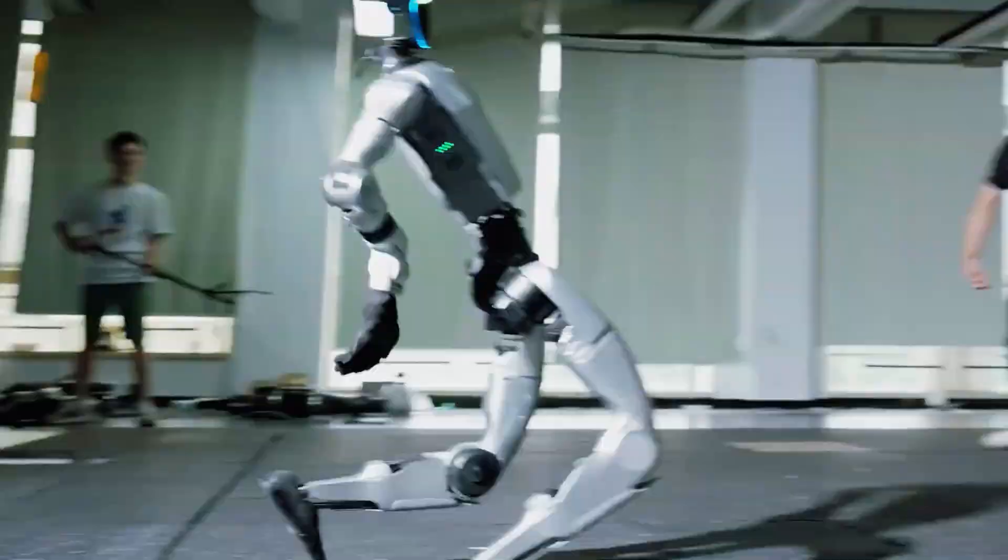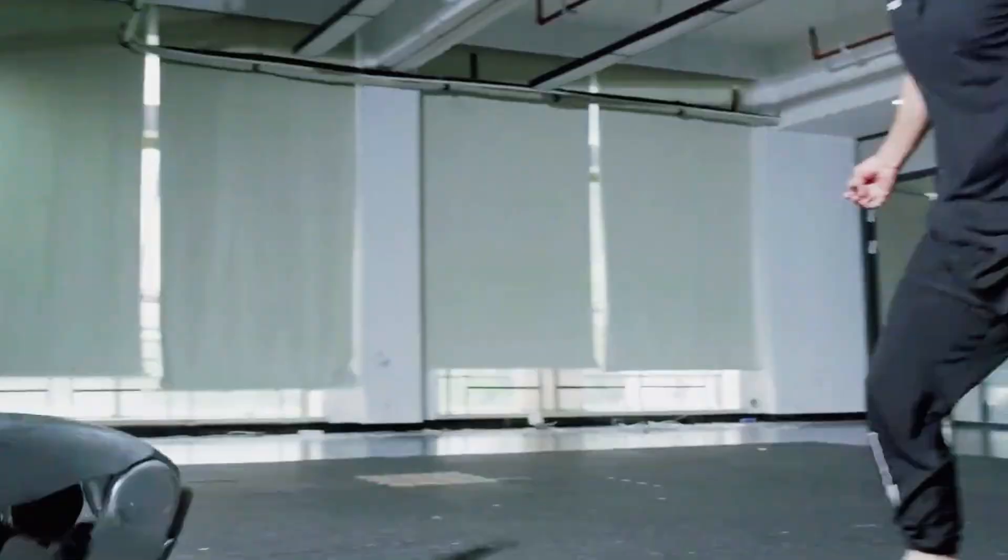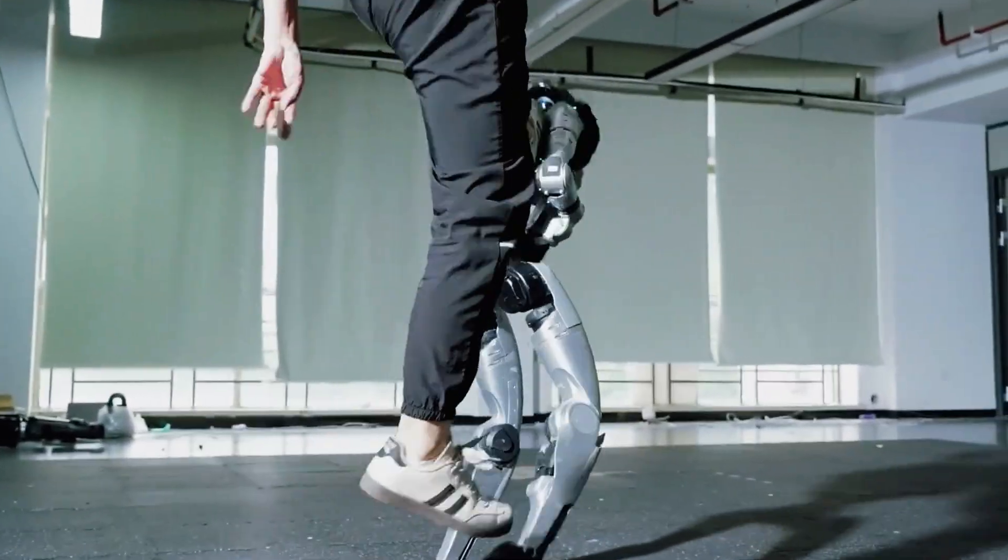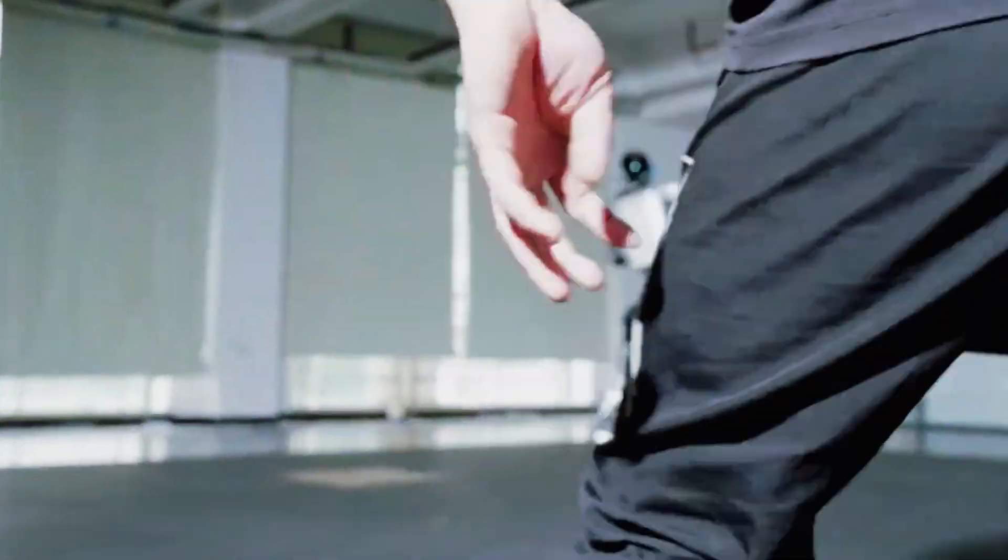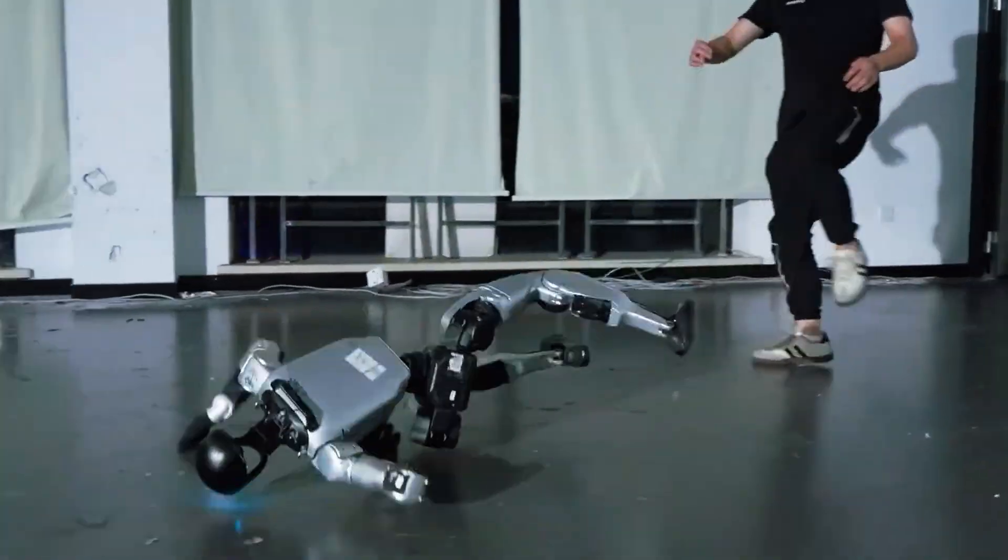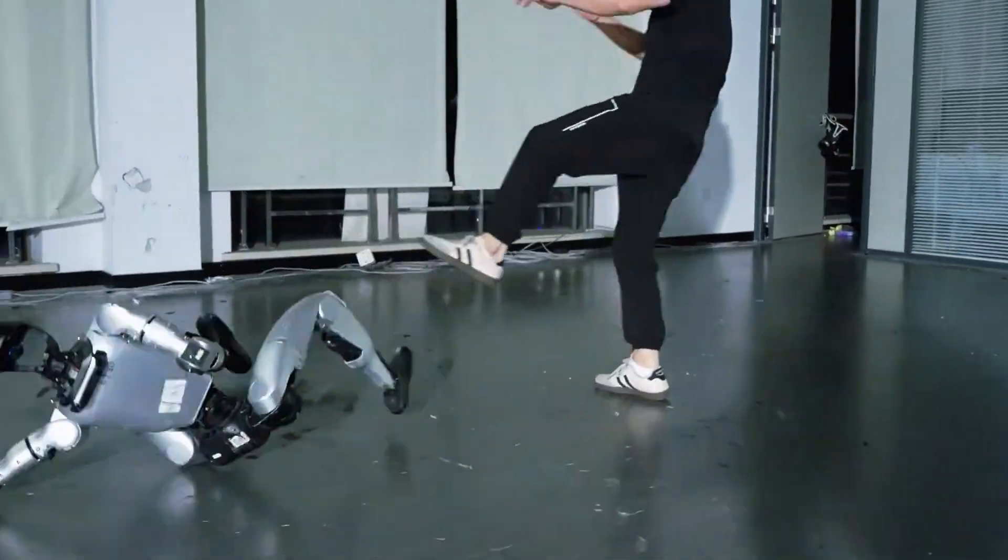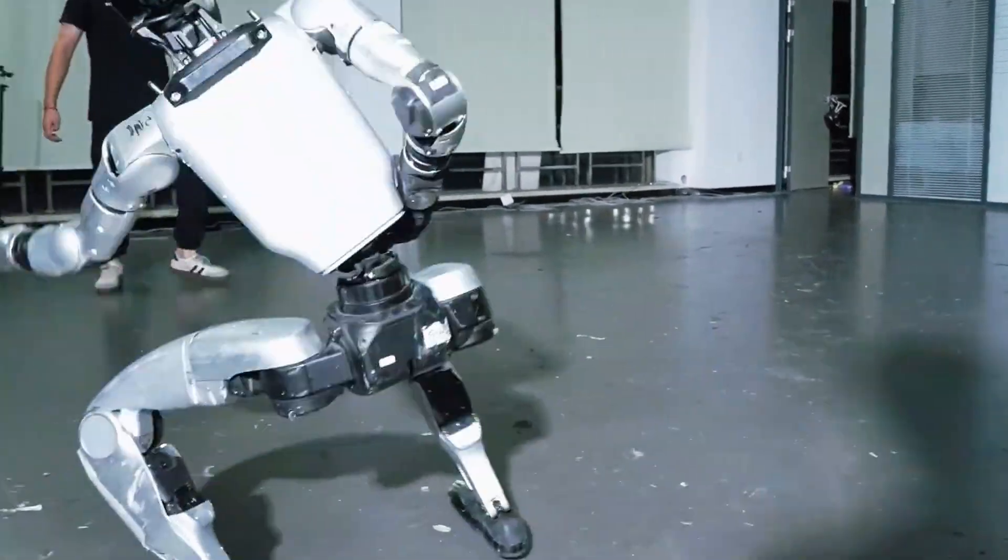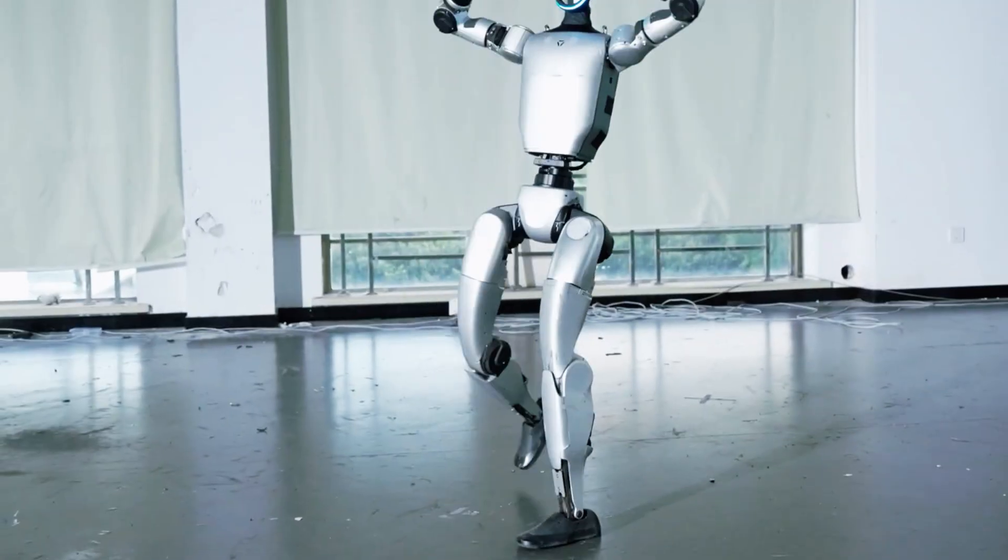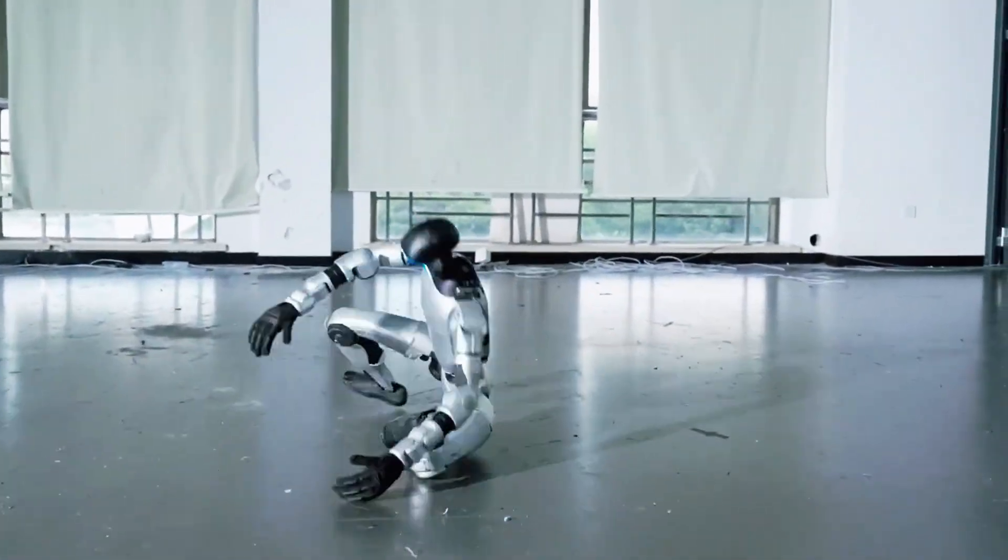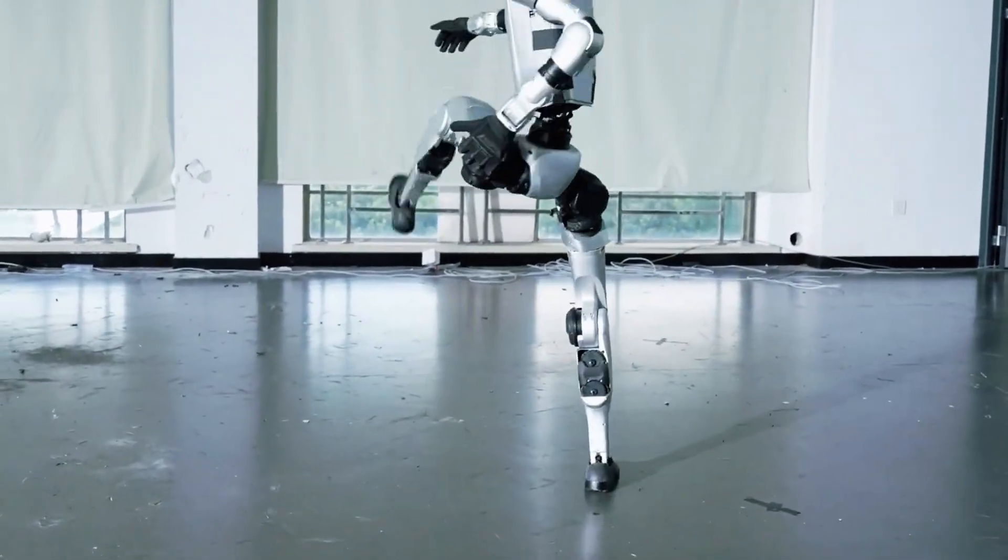So how is this even possible? Behind the scenes, it's all about some insane engineering wizardry. The G1 trains first in a virtual environment, think motion capture meets endless practice reps, before those moves get transferred to the real hardware. Add in high torque joints, stability algorithms, and a system that reads and corrects its balance faster than you can say oops, and you've got a machine that looks like it's literally bending the rules of physics.